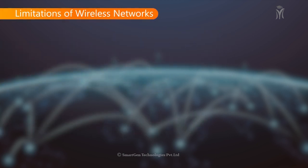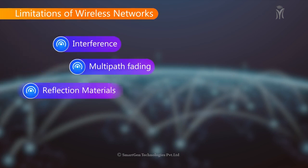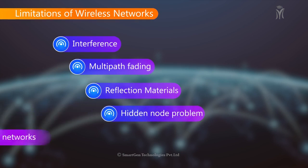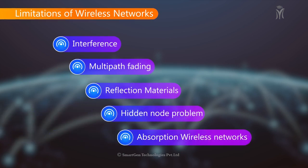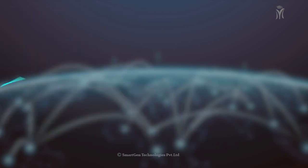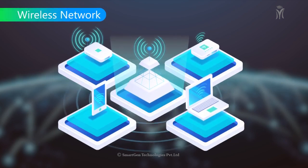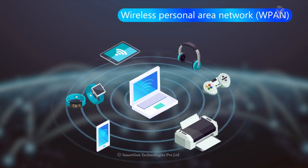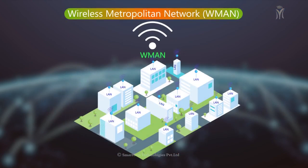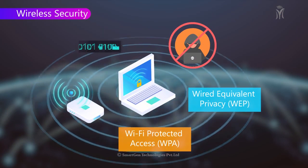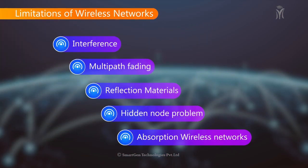Limitations of wireless networks include interference, multi-path fading, reflection, hidden node problems, and absorption. Summary: in this video we have learnt about wireless networks, types of wireless networks, security of wireless networks, and their limitations.